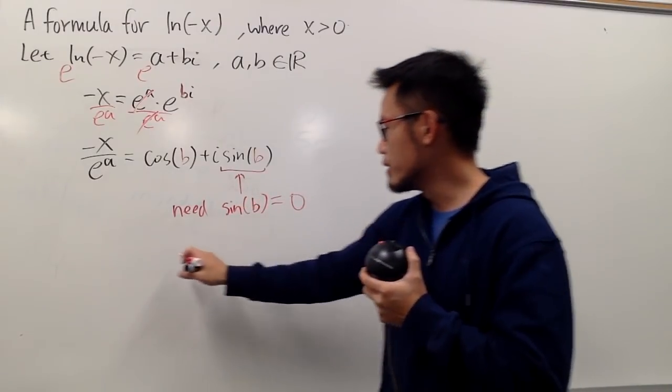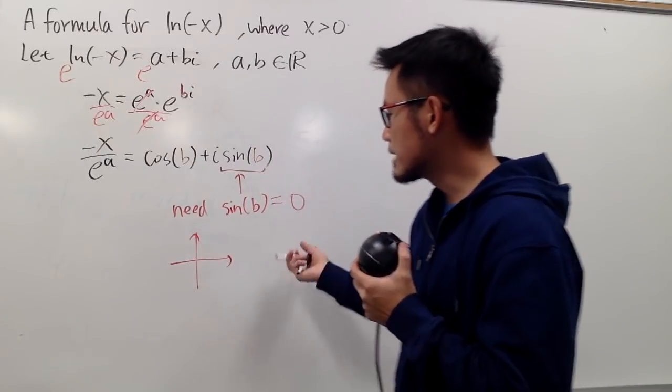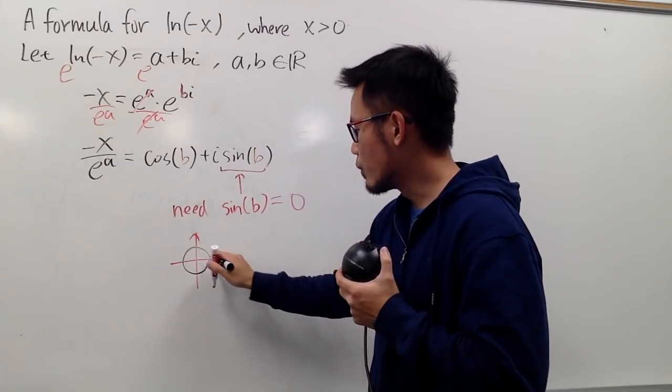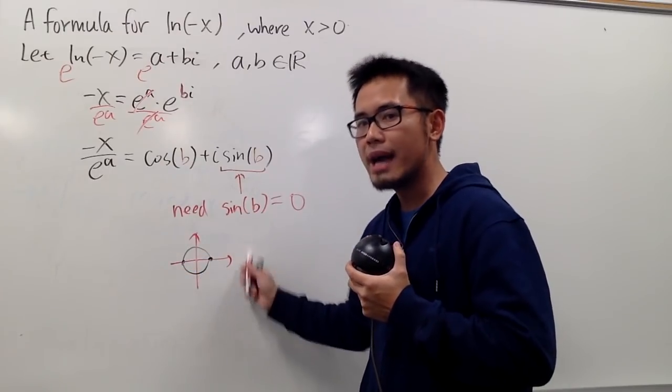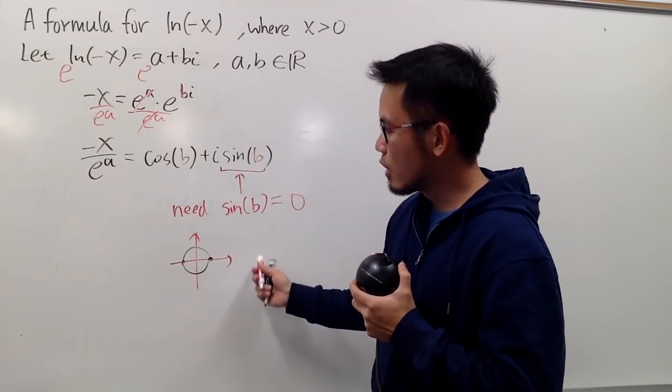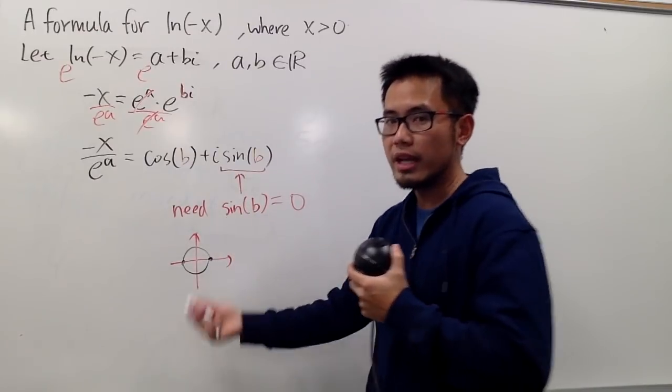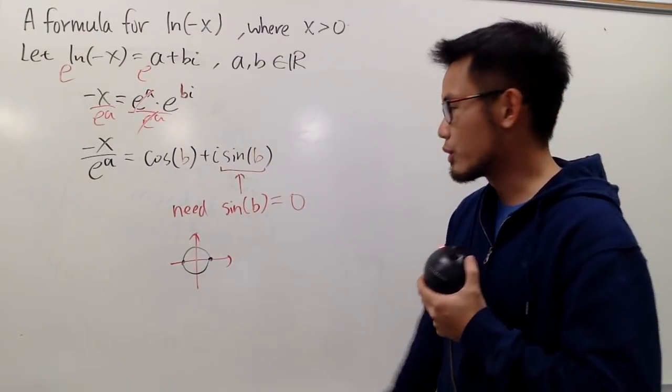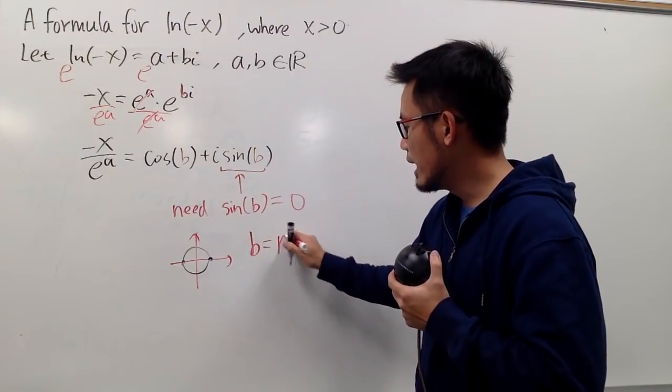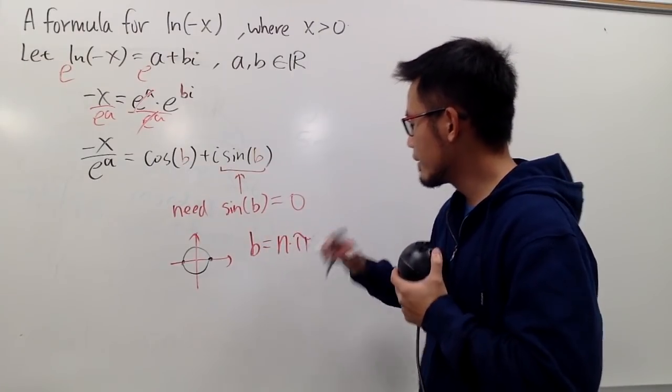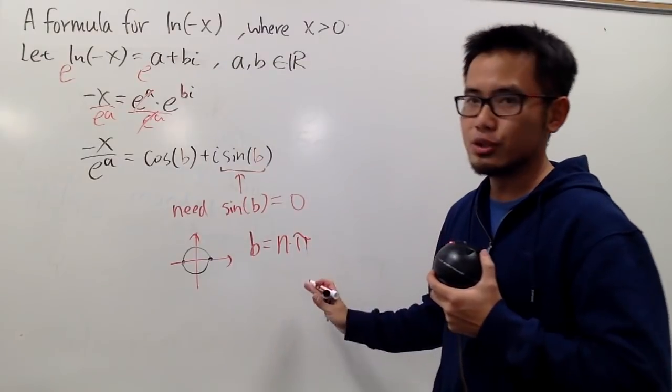And if you look at the unit circle real quick, sine is the y value on the unit circle, so we can have this right here, this right here, namely zero, pi, two pi, three pi, so on, and we can also go backwards, so negative pi, negative two pi, and so on. So, we must have b equal to n pi. Where n is an integer.